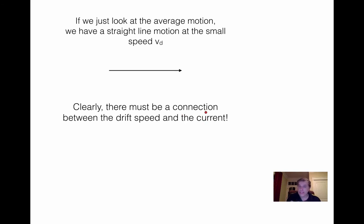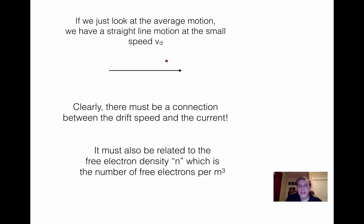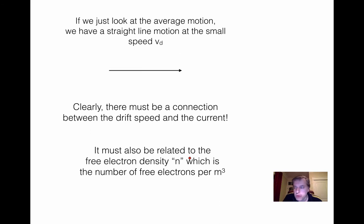The current you can measure easily in the lab, but the drift speed you cannot measure directly — you cannot see the electrons. So if you know the current and some other factors for a certain material, you can calculate how fast the free electrons are drifting in the wire for a given current. The current and drift speed are also related to the free electron density. The free electron density n (lowercase n) is the number of free electrons per cubic meter. Clearly, if you have just a handful of free electrons moving at a certain speed you'll have a small current, but if you have a huge number of free electrons all moving at the same speed, you'll have a larger current. So there must be a connection between the drift speed, the current I, and the free electron density.